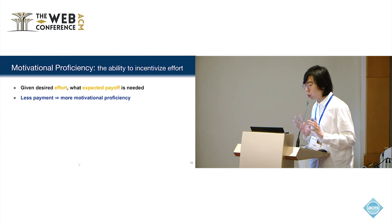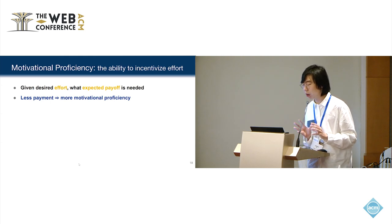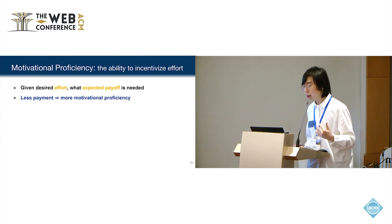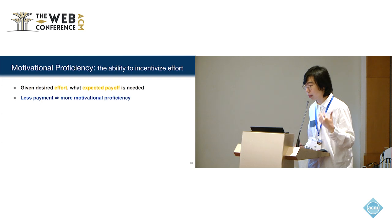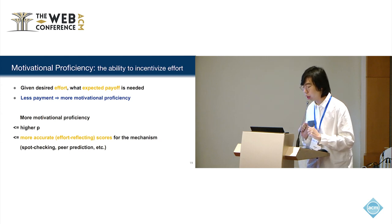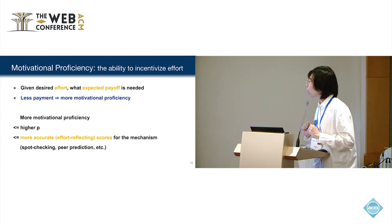Therefore, we propose this term called motivational proficiency: the ability to incentivize effort. It's the expected total payoff which is needed to elicit the desired effort level. If the payment is less, that means the mechanism has more motivational proficiency. If we want more motivational proficiency, we need a higher p in the previous example, and then we need higher accurate scores reflecting the effort for the mechanism. This applies to both spot-checking mechanisms and peer-prediction mechanisms.